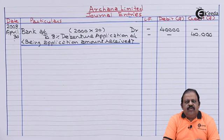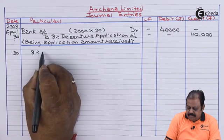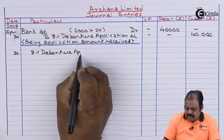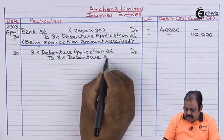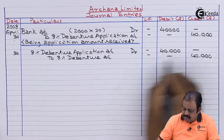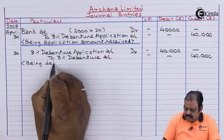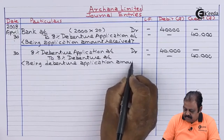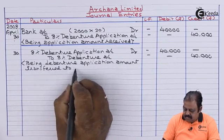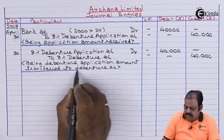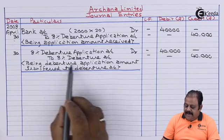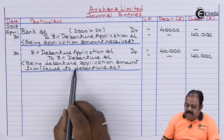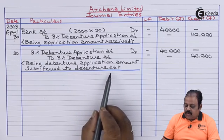This amount will be transferred to debenture account. That will be our next entry: 8% debenture application account debit Rs. 40,000 to 8% debenture account Rs. 40,000, being debenture application amount transferred to debenture account.